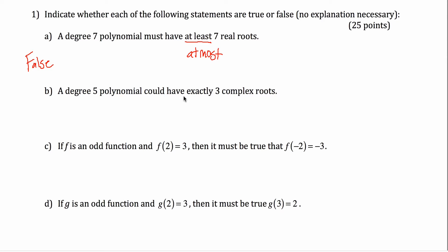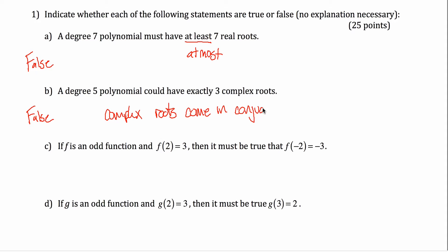The second one: a degree five polynomial could have exactly three complex roots. That is also false, but for a different reason. The sum of the multiplicities of the roots has to equal five. However, complex roots always come in conjugate pairs, so we must have an even number of complex roots. For example, if two plus three i is a complex root, then two minus three i must also be a root. There's no way to have three complex roots — you could have two or four. That's a false statement.